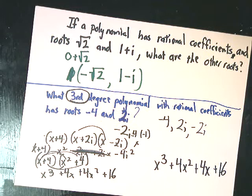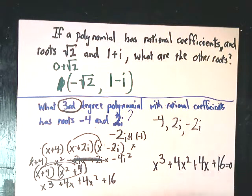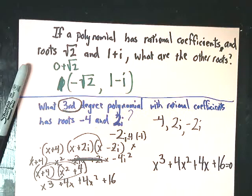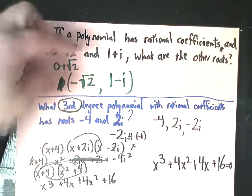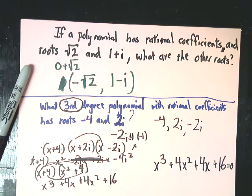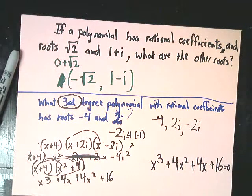This theorem is a bit more helpful. All you need to remember is: to get rational coefficients, you need a negative and positive version of your irrational or imaginary root so they cancel out. For square roots, √2 × √2 gives just 2 — no square root remaining. For imaginary numbers, you want a + bi and a - bi so the middle term cancels, and then i × i = i² = -1, making the result real.